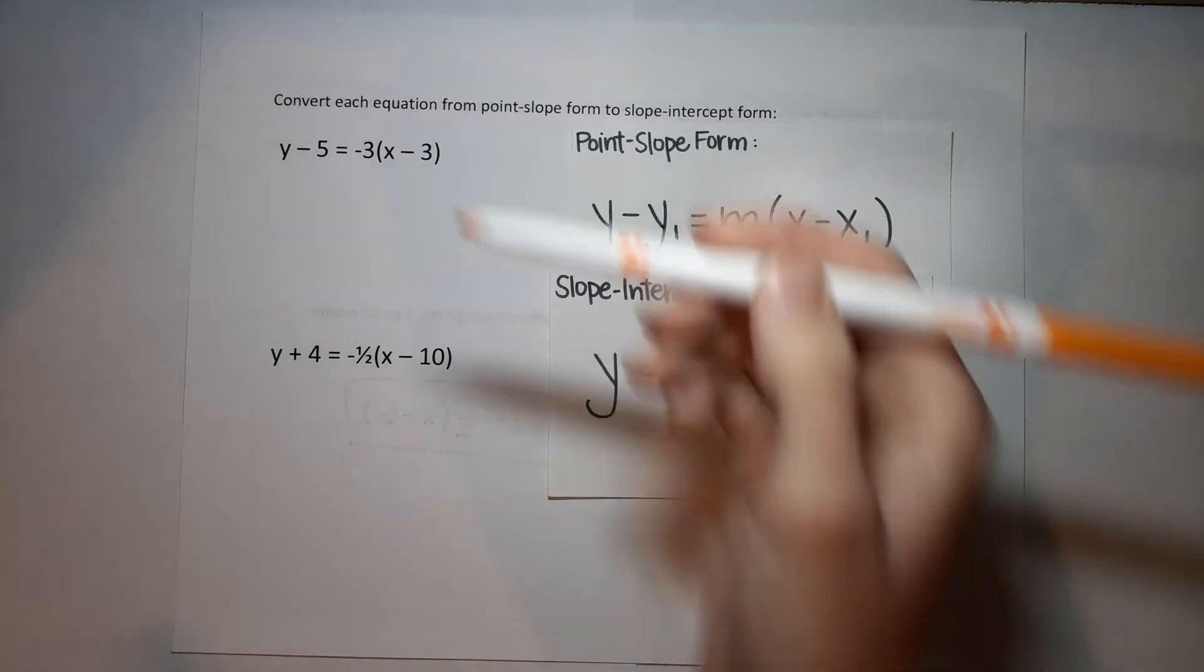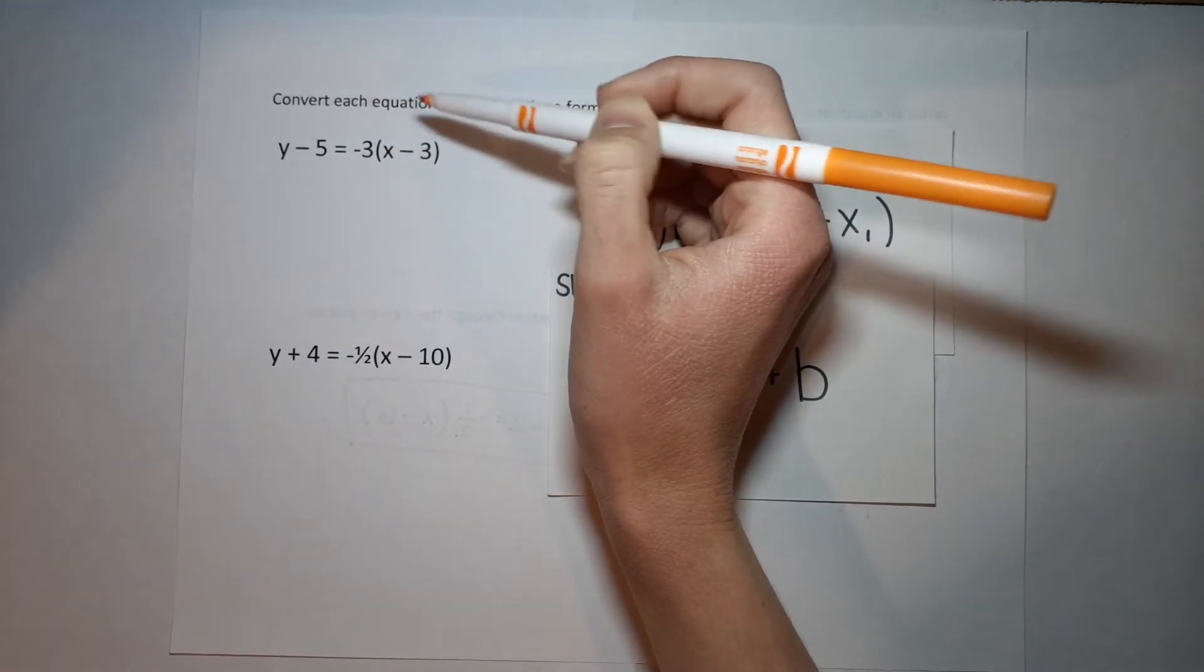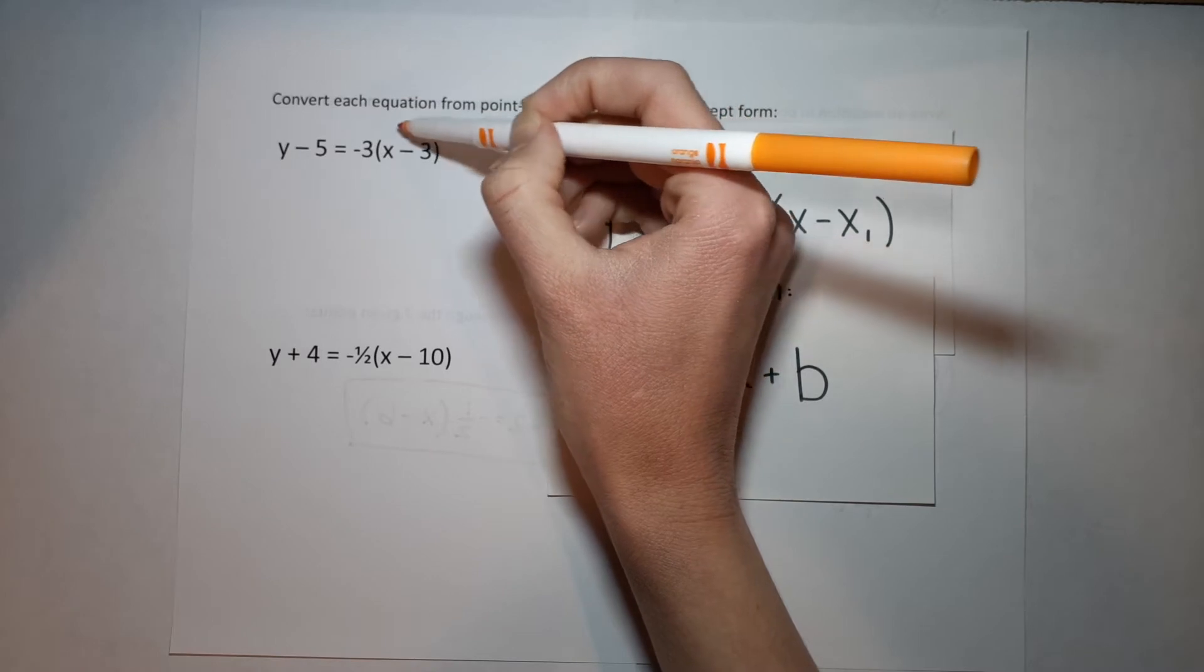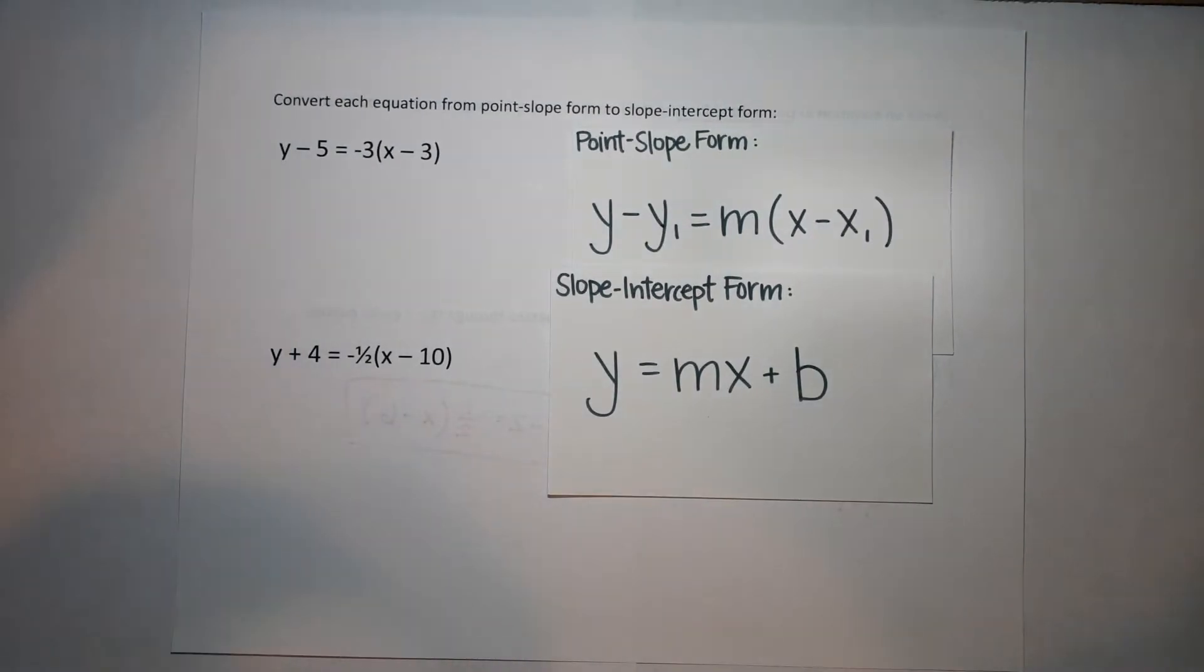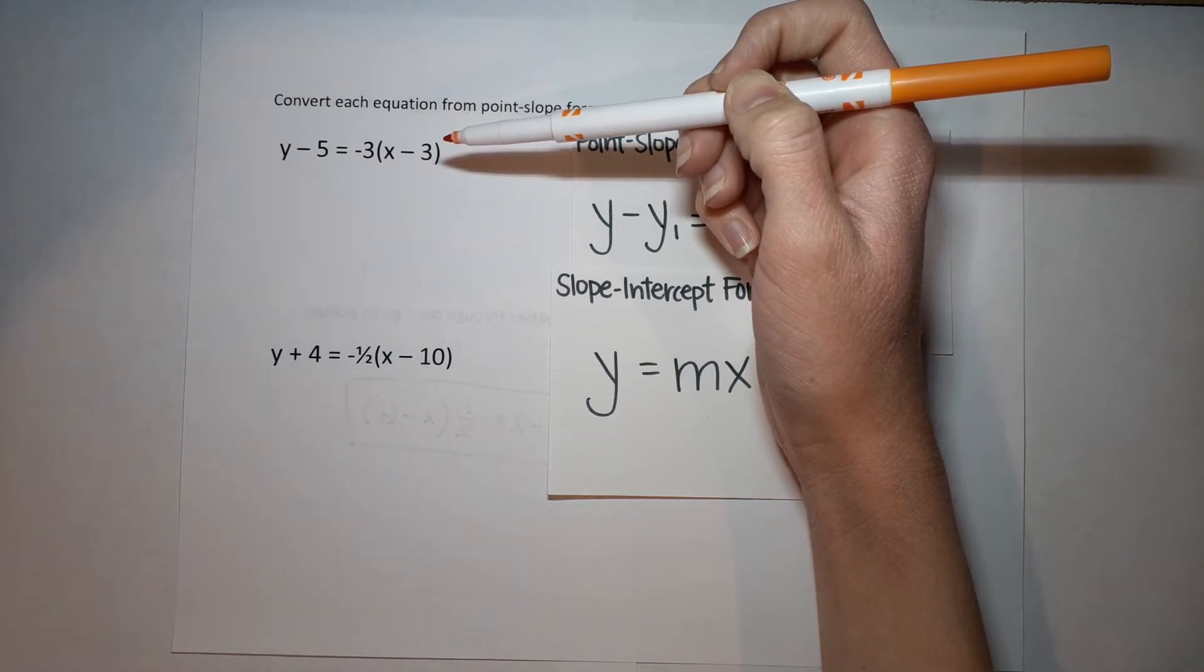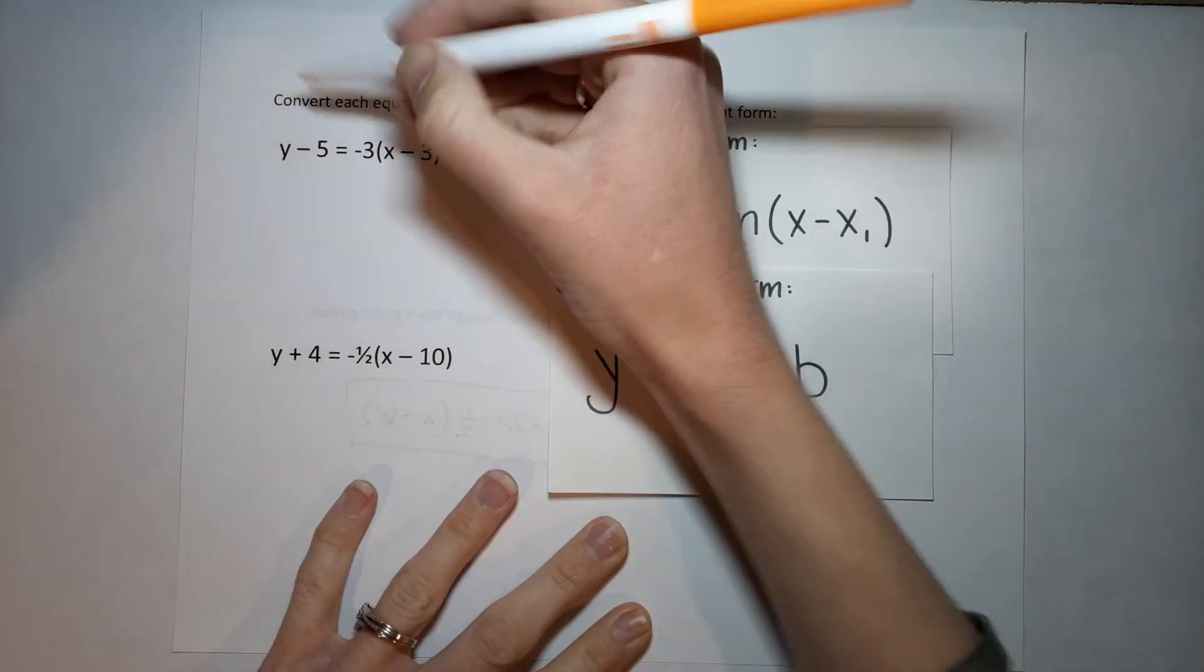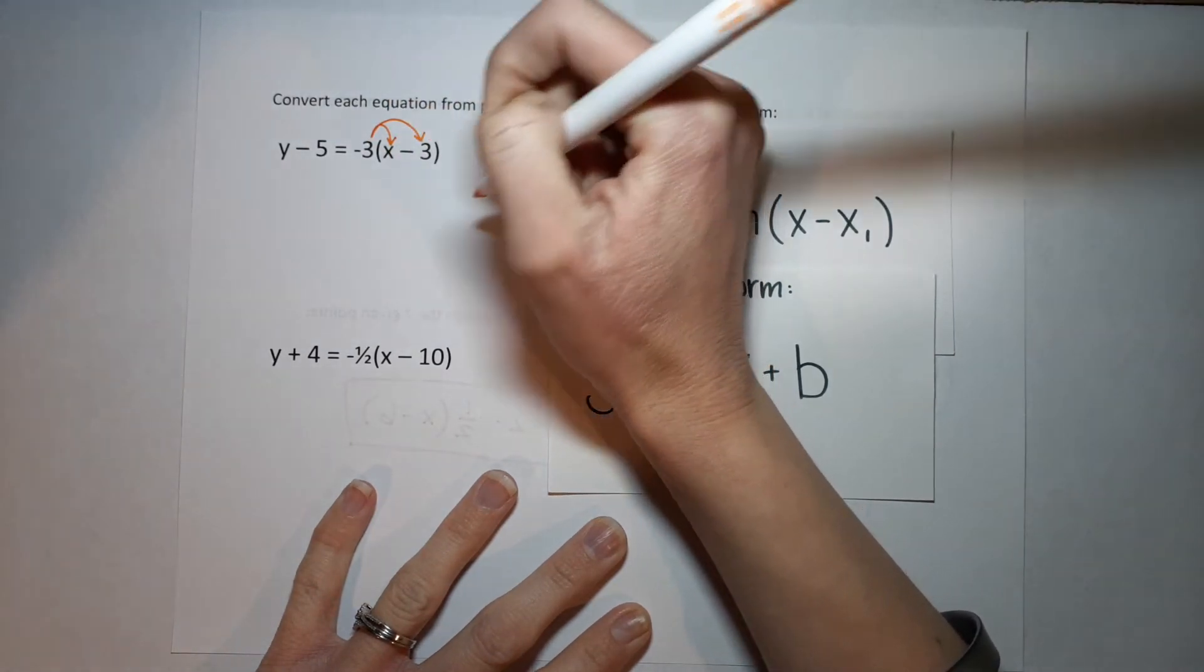The first thing I need to do is over here, we don't want all these parentheses. They're kind of in our way. We want to get rid of them. So what we're going to do is called distribute. Now, we have x minus 3 here. These aren't like terms, so I can't combine them. And so normally I would be stuck, except this beautiful thing called the distributive property fixes it.